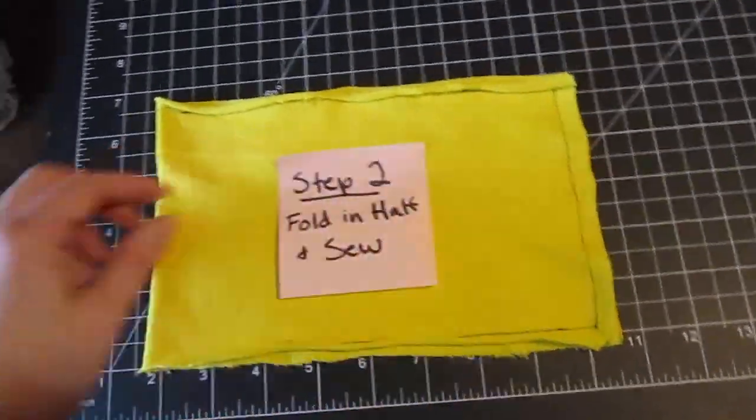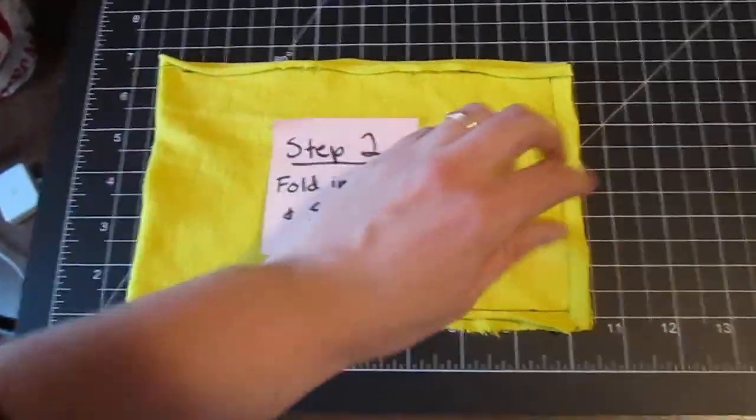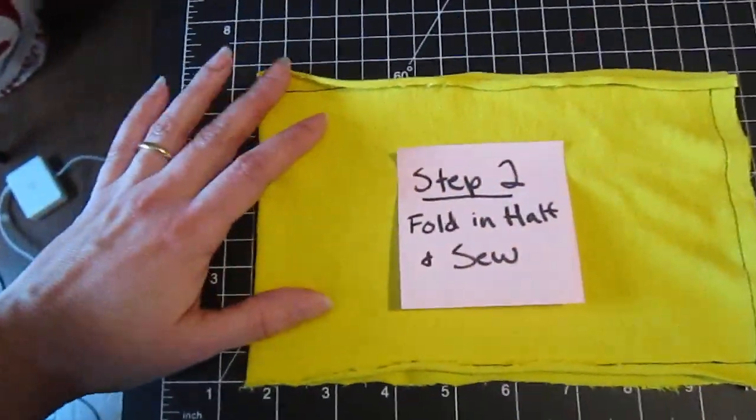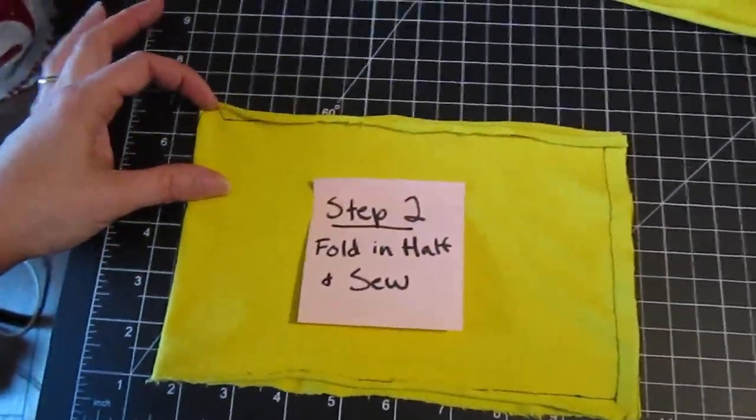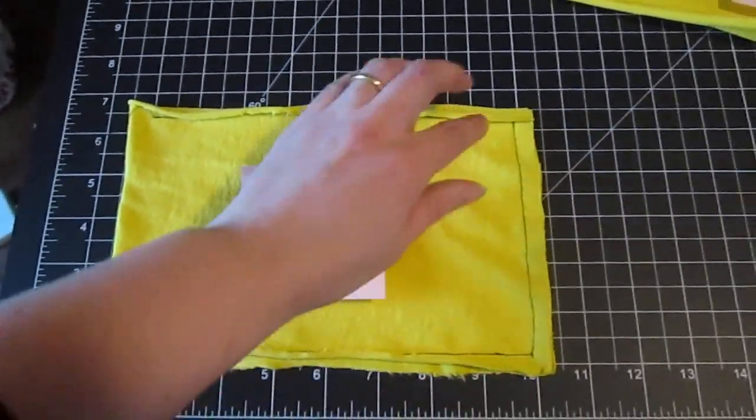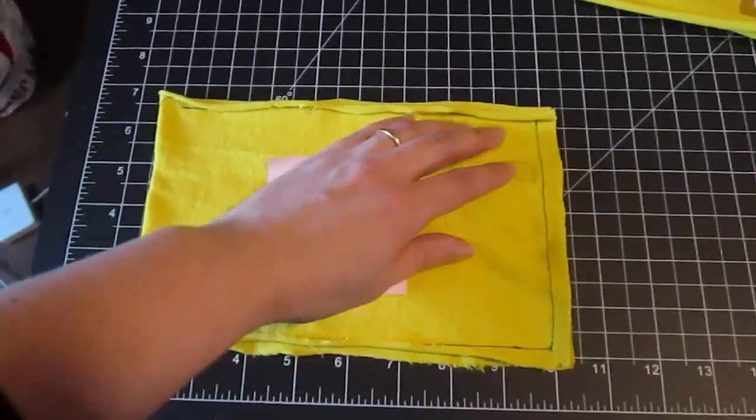So it's folded in half. This is the fold side. And what you want to do is you want to sew along the edges here but you want to leave half edge gaps here, here and here that become the openings for the casing.